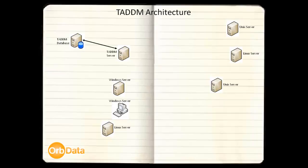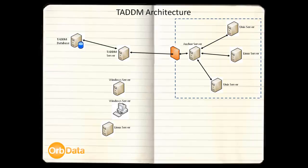TADM uses a combination of Simple Network Management Protocol (SNMP), Secure Shell (SSH), and Windows Management Instrumentation (WMI) to perform the discovery. If TADM determines a specific IP device is running a version of Unix or Linux, SSH is used. If it is running Windows, WMI is used; otherwise SNMP is used. If the targeted servers to be discovered are separated from the TADM server by a firewall, TADM requires that an anchor server be defined on the other side of the firewall. The anchor server performs the discovery on behalf of the TADM server, and the discovery results are fed back to the TADM server via the anchor server.